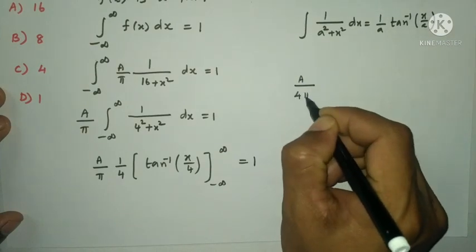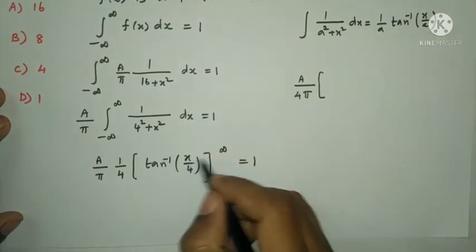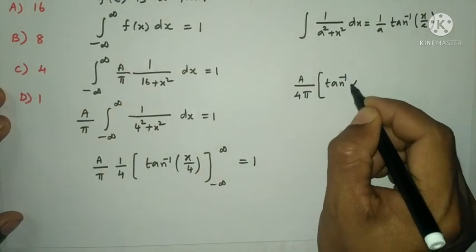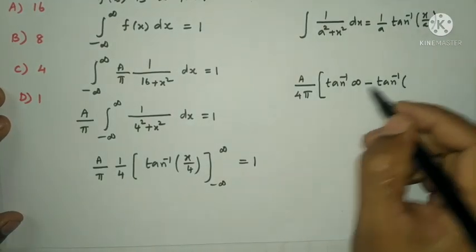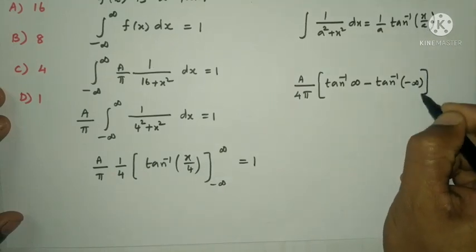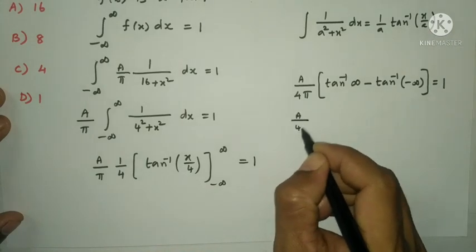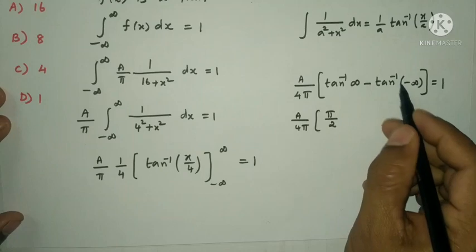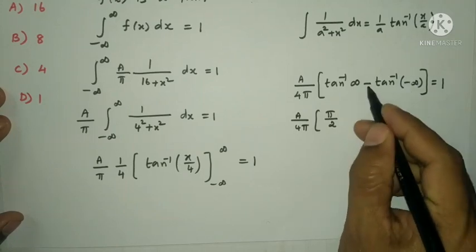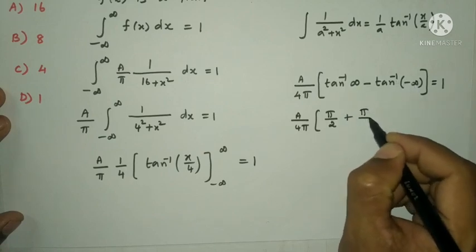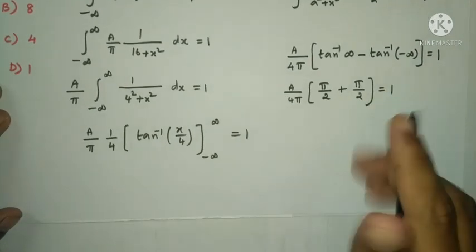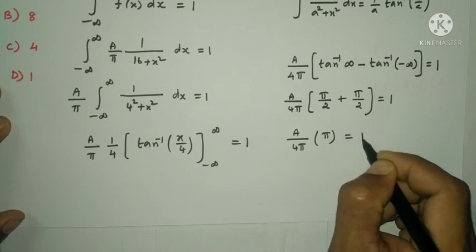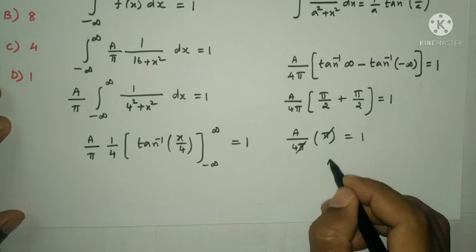So we get (A/(4π))·[tan⁻¹(∞) - tan⁻¹(-∞)] = 1. Now tan⁻¹(∞) = π/2 and tan⁻¹(-∞) = -π/2. So (A/(4π))·[π/2 + π/2] = 1, which gives (A/(4π))·π = 1, so A/4 = 1, therefore A = 4.